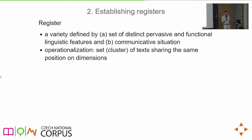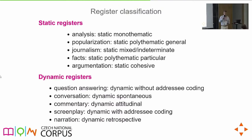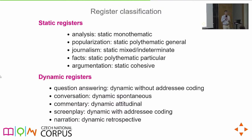We came up with ten registers, divided into two groups based on the first dimension — dynamic versus static — giving us five static and five dynamic registers. The static registers are: analysis (static monothematic), popularization (static polythematic and general), journalism (indeterminate), facts (static polythematic and particular), and argumentation (static and cohesive).